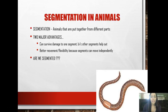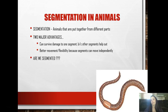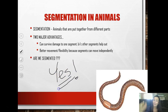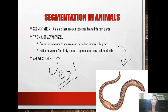Something else animals have is segmentation - the fact that animals are put together from different parts. There are some great advantages to this. First, you can survive damage to one segment because the other segments help out. You also have better movement and flexibility because your segments can move independently. Are we segmented? Yes - we are highly specialized and segmented, though it's hard to see our segments like you would in this earthworm here.